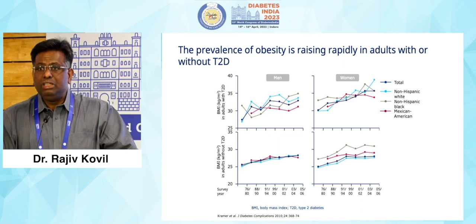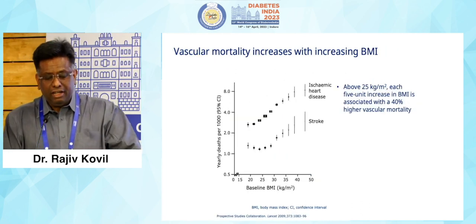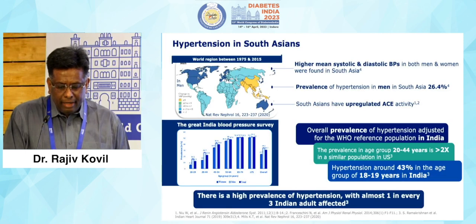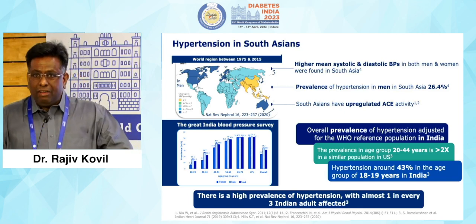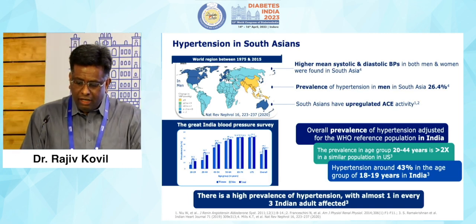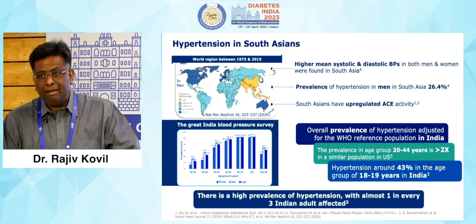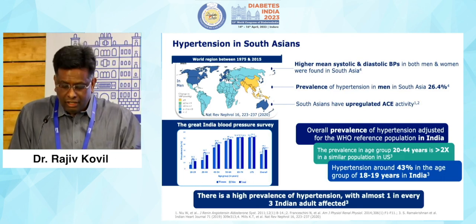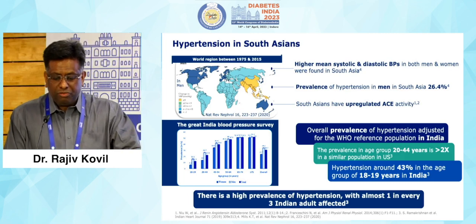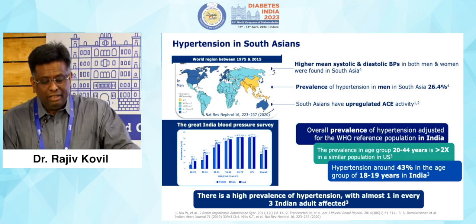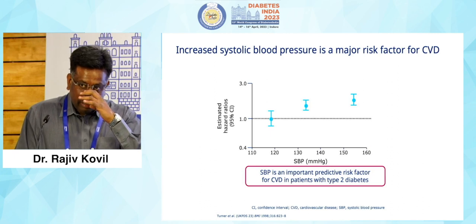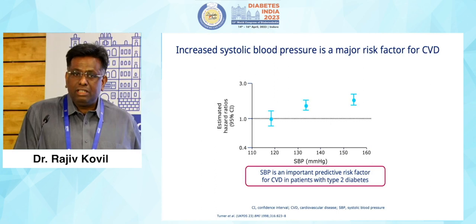Obesity is the mother of all non-communicable disorders, and data strongly suggests that mortality increases with obesity. Hypertension is one of the most prevalent non-communicable diseases — probably the most dangerous. It affects almost 26% of the population — roughly two and a half times the prevalence of type 2 diabetes. In the age group of 20–44, hypertension prevalence is two times higher in our population compared to the US, where it is around 43%. Unfortunately, risk factor profiling and management of hypertension is not optimally done.